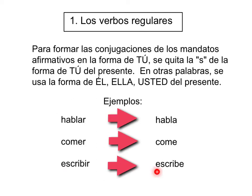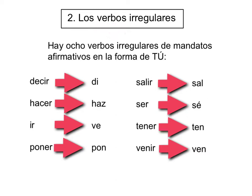Ahora vamos a revisar los verbos irregulares. Hay ocho verbos irregulares de mandatos afirmativos en la forma de tú.